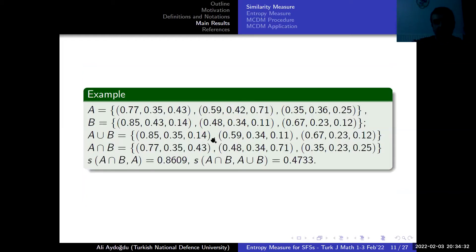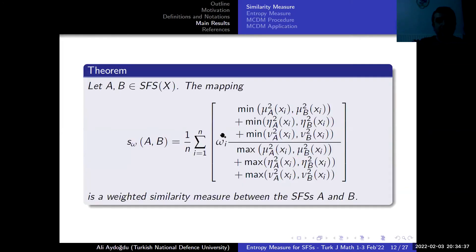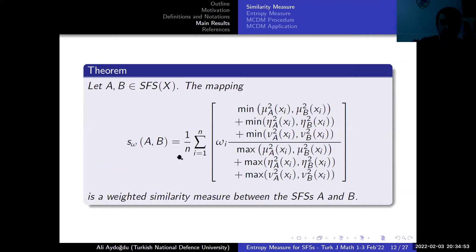We give a basic example for spherical fuzzy sets. We then propose the weighted similarity measure between spherical fuzzy sets and prove that this mapping satisfies the conditions of the previous definition.